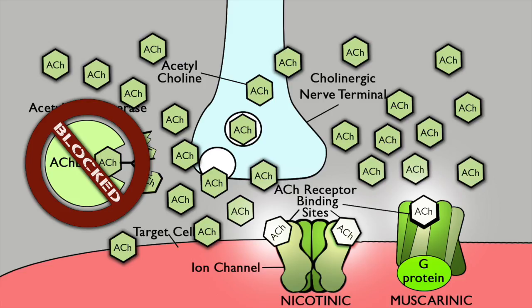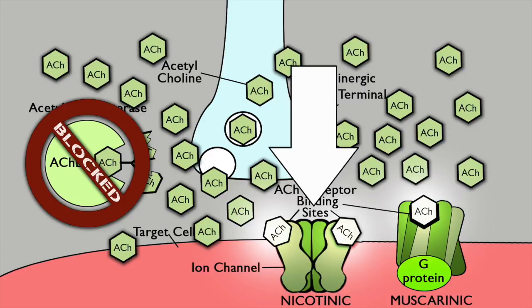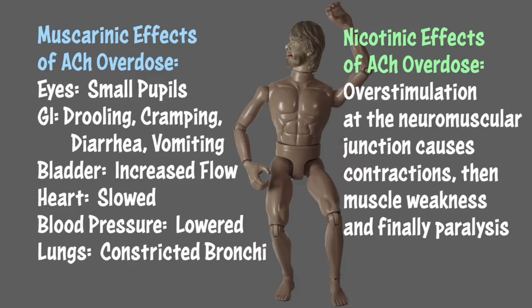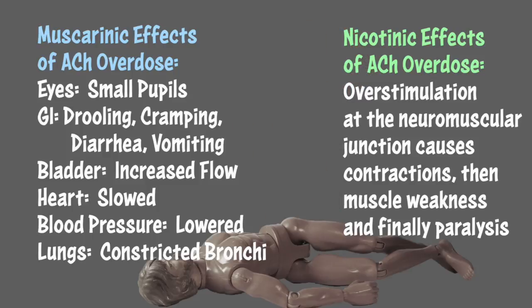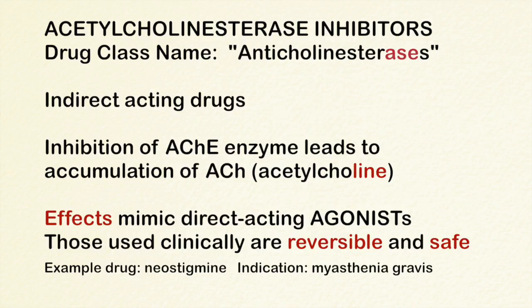Acetylcholine also binds nicotinic receptors in skeletal muscle, causing contraction. With repeated contraction, the muscle gets fatigued and won't contract anymore. Not only does that make you fall to the floor, but it also prevents you from breathing because you need those rib cage muscles to breathe. Fortunately, doses of normal reversibly binding anticholinesterases are fine, and we use them for a variety of problems including myasthenia gravis.